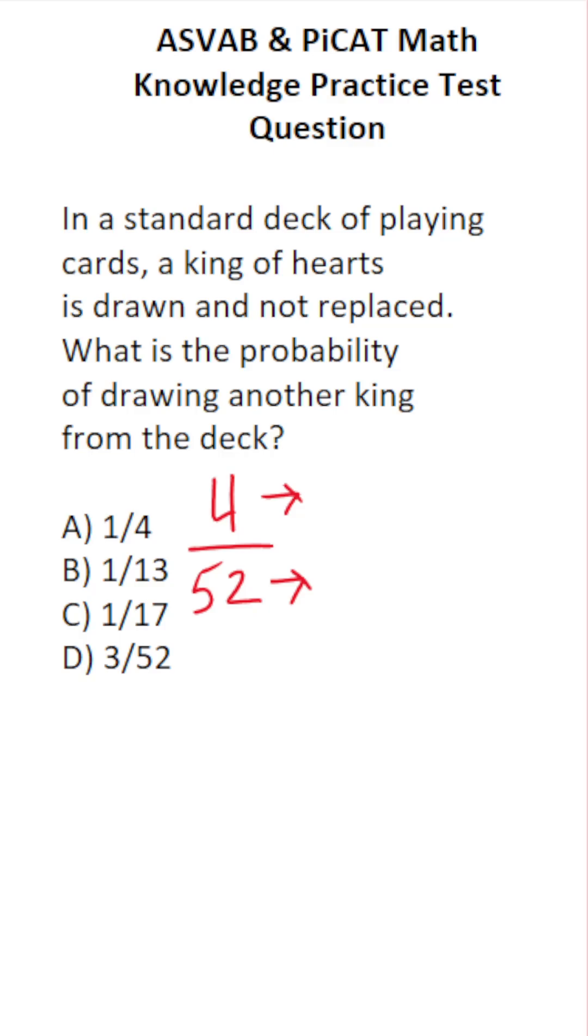So when that card is drawn, what happens to the deck? Well, we're down to three kings in the deck and 51 cards in the deck.